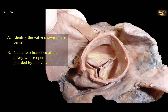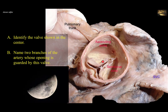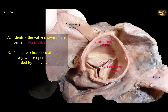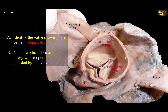Identify the valve shown in the center and name two branches of the artery whose opening is guarded by this valve. This is a superior view of the heart showing the pulmonary trunk pulled anteriorly. Behind it is the sectioned ascending aorta, and to the right is a stump of the superior vena cava. The valve shown has three semilunar, half-moon-shaped cusps, and since it is located at the beginning of the ascending aorta, it is the aortic valve. The two branches are the right coronary artery and the left coronary artery. The right coronary artery originates between the right auricle and the pulmonary trunk, while the left coronary artery originates between the left auricle and the pulmonary trunk.